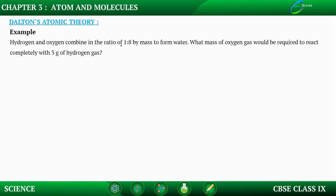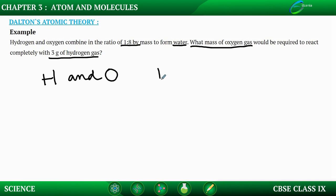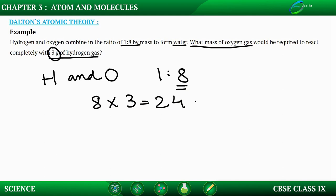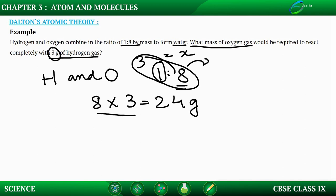The next question: hydrogen and oxygen combine in the ratio of 1:8 by mass to form water. We need to find what mass of oxygen gas would be required to react completely with 3 grams of hydrogen gas. It is given that the ratio of hydrogen to oxygen is 1:8, so the mass of oxygen required to react with 1 gram of hydrogen is 8 grams. Therefore, for 3 grams of hydrogen, the mass of oxygen required is 8 multiplied by 3, which gives 24 grams.